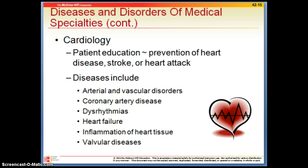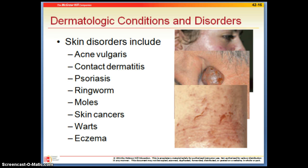Heart failure, often called CHF or congestive heart failure, is very common. As we age, the heart muscle becomes weaker, just like all muscles in the body, and this is what many people die of at older age. On rare occasions, viruses or flu can inflame the heart tissue itself. There are also valve diseases, which have implications for heart murmurs and improper blood flow through the heart.